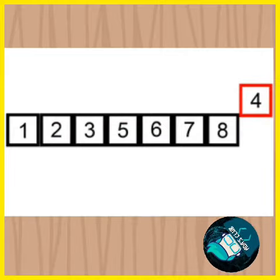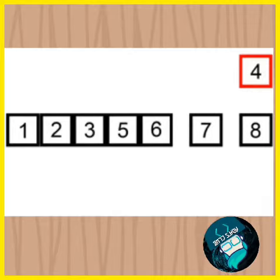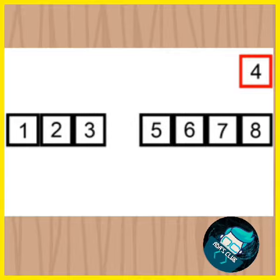Now 4 is compared with 8, 7, 6, 5 and 4 is placed before 5 as it is smaller than 5 and greater than 3. Finally, the list is sorted.